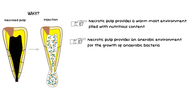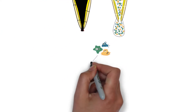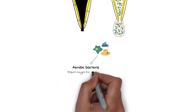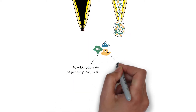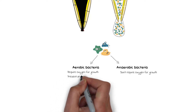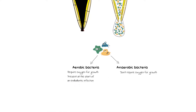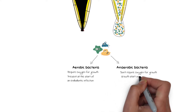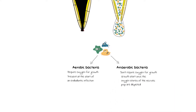Remember, there are two main types of bacteria depending on the need for oxygen for growth: aerobic bacteria, which require oxygen for division, and anaerobic bacteria, which do not. At the start of an endodontic infection, the already present oxygen stores of the necrotic pulp are depleted by aerobic bacteria. Once those oxygen stores are depleted, this provides a favorable environment for anaerobic bacteria, and hence the anaerobic bacteria eventually show domination.